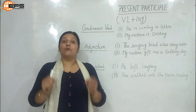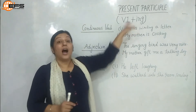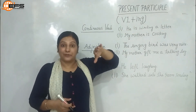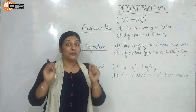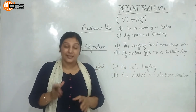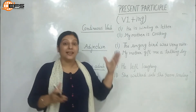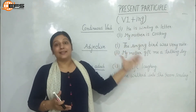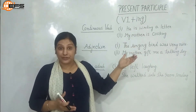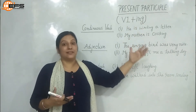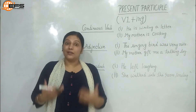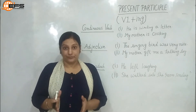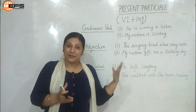Present participle, being a non-finite verb, always exists alongside the main verb. How is it different from a gerund? The structure of both gerund and present participle is V1 + -ing, but gerund is used in a sentence as a noun, whereas present participle is always used as a verb. That is the basic difference between a gerund and a present participle.